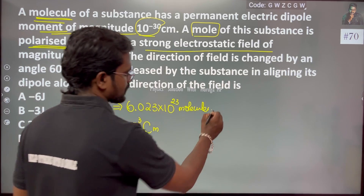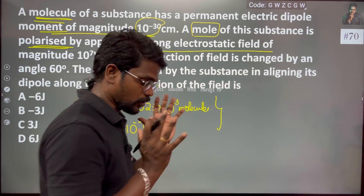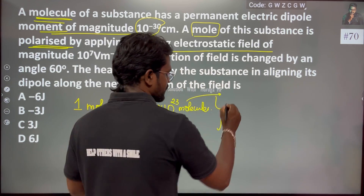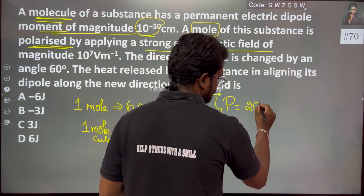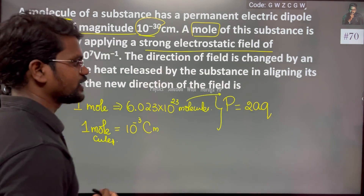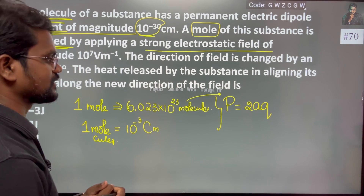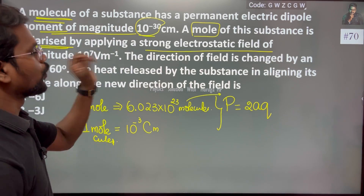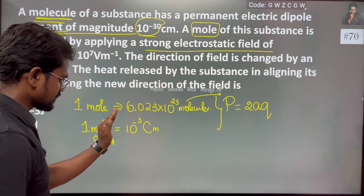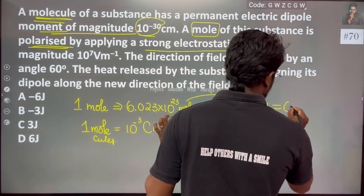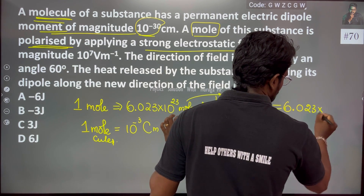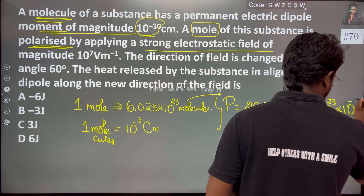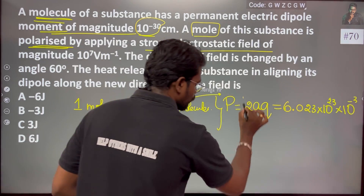Overall, one mole of substance is polarized. The dipole moment P is equal to 2aq. So 2aq. One mole.